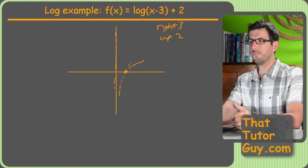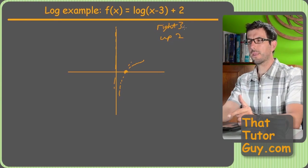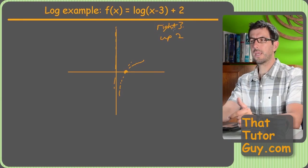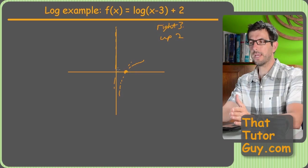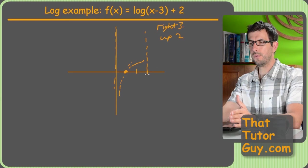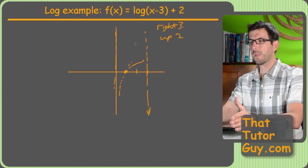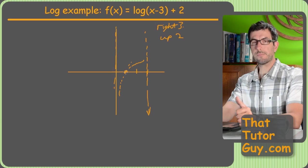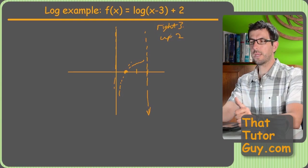All right, so let's see what this is going to do. We're shifting it right 3 and up 2. So the first thing I notice is my asymptote is going to move, because a lateral shift will affect my asymptote. So my new asymptote, instead of being at 0, is going to be at 3. So that's my new asymptote.